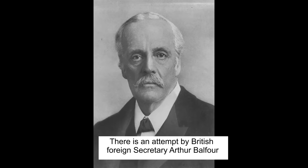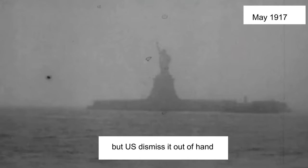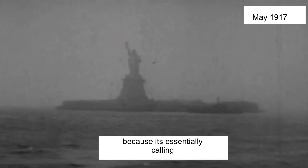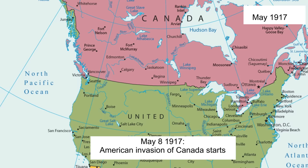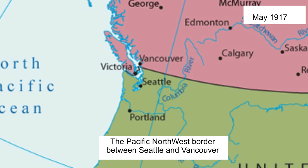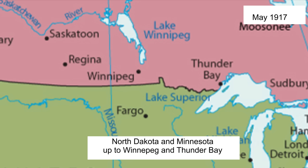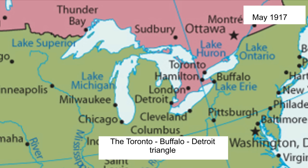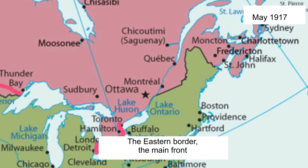There is an attempt by British Foreign Secretary Arthur Balfour to make a peace proposal, but the USA dismisses it out of hand, because it essentially calls for a return to the pre-war situation. May 8, 1917, the American invasion of Canada starts on four main fronts: the Pacific Northwest border between Seattle and Vancouver; North Dakota and Minnesota up to Winnipeg and Thunder Bay; the Toronto-Buffalo-Detroit Triangle; and the eastern border — the main front, defending Canada's largest cities and access to the Atlantic.